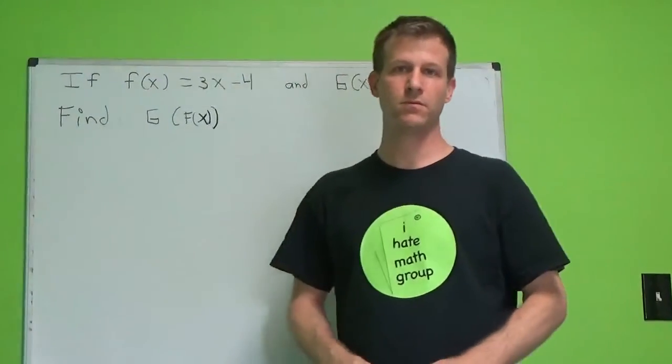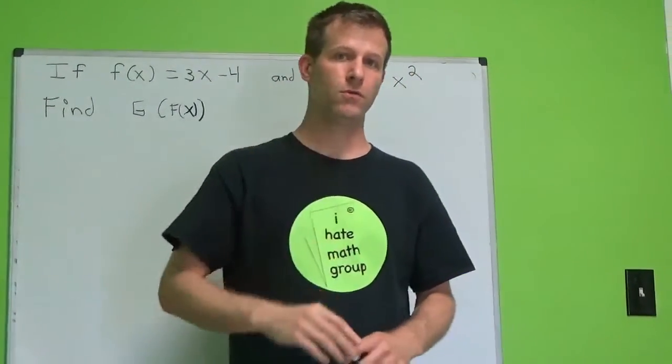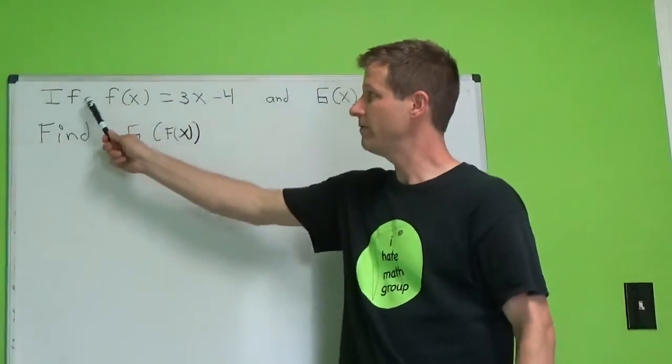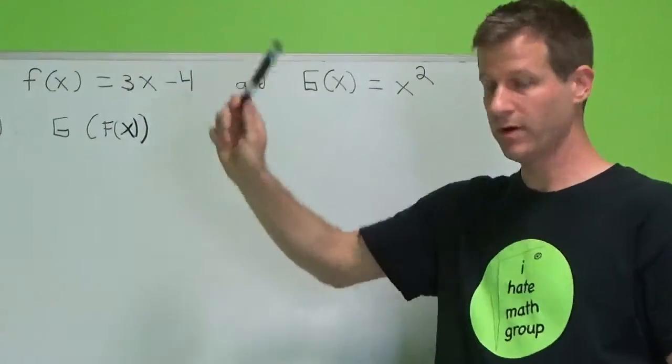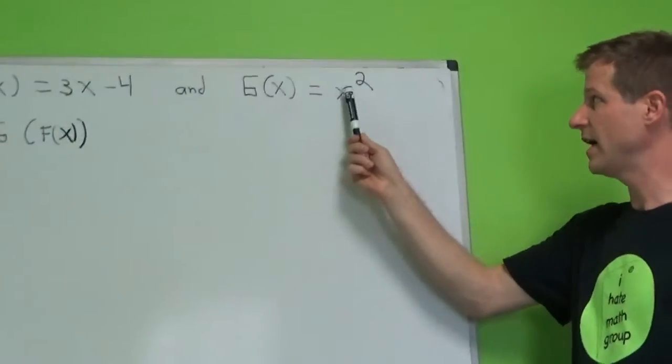So we have here a function, okay? It's two functions. We have f of x equals 3x minus 4, that's one, and the other one is g of x equals x squared.